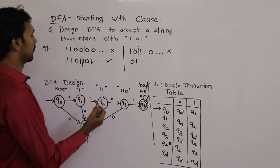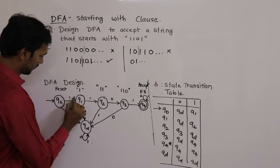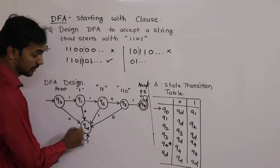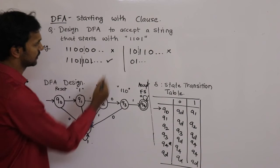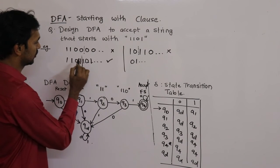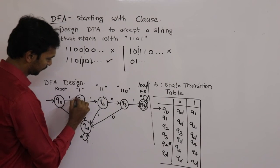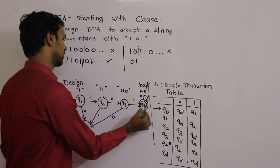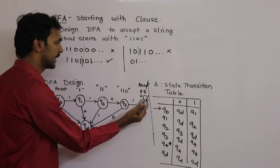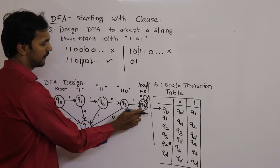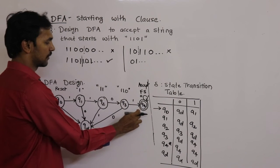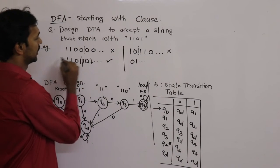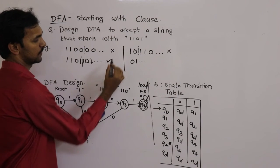Let's simulate some inputs. For input 1,1,0,0,1,1,0,0: at the 4th bit (0 instead of 1), the machine goes to Qd and never comes out — permanent decision: do not accept. For input 1,1,0,1,1,0,1: the machine processes 1,1,0,1 correctly and reaches Q4, then stays in Q4 for the remaining bits. Since the machine is in Q4 — the final state — at the end of execution, this string is always acceptable.